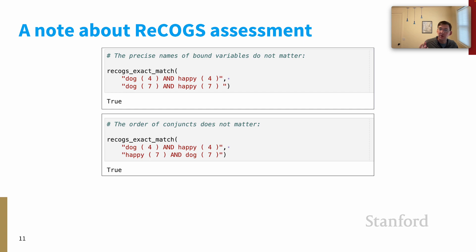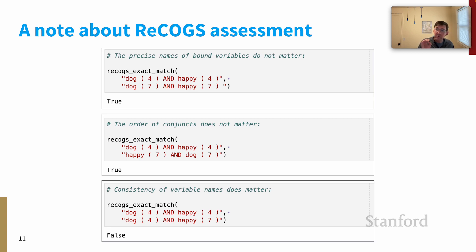Here's another case. The order of conjuncts does not matter. That seems intuitive semantically, and we wanted it to be realized in our evaluation code. So 'dog and happy' and 'happy and dog' evaluate to true. The order of the conjuncts is incidental.